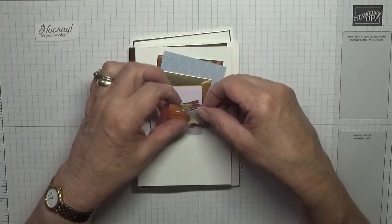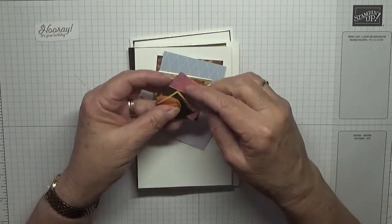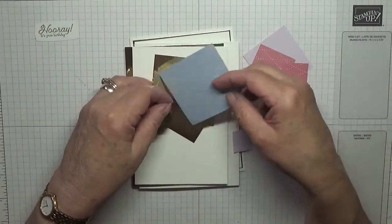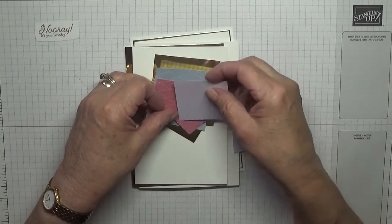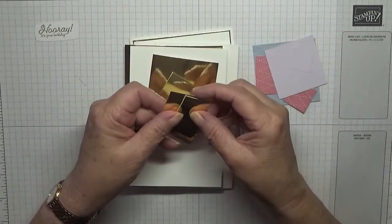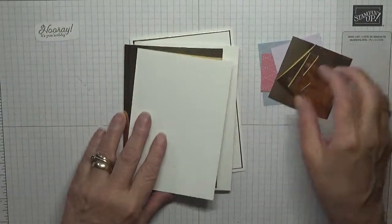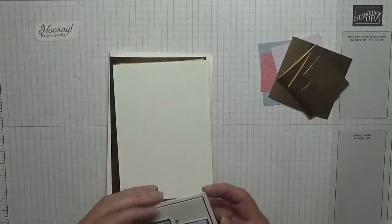The DSP I've used is all the ink colors that are retiring, so I've got Seaside Spray, Rococo Rose, and Purple Posy. I've used them three again. All we've got to do is glue all this together and stick it on dimensionals.